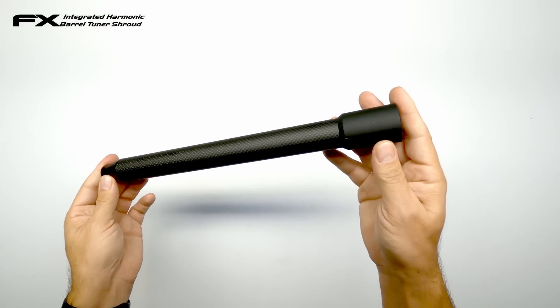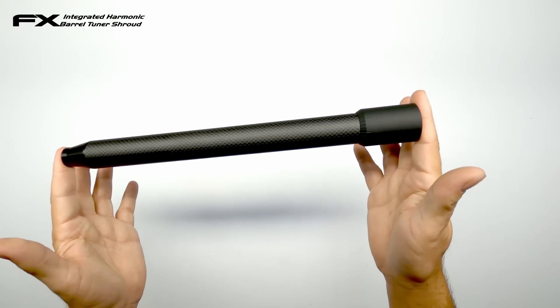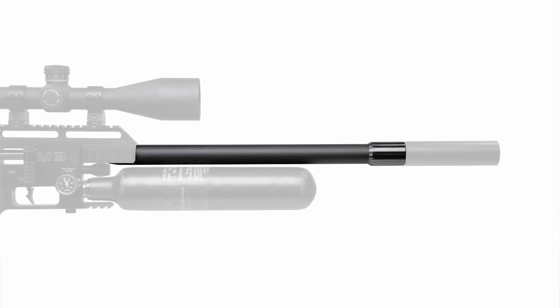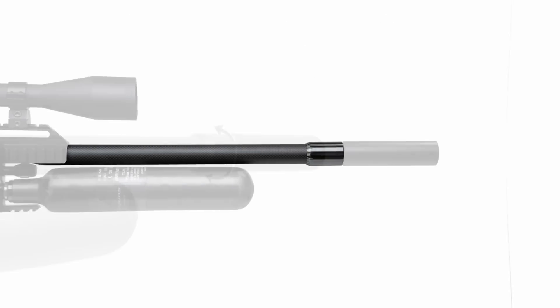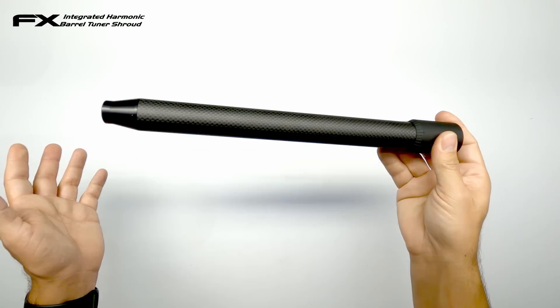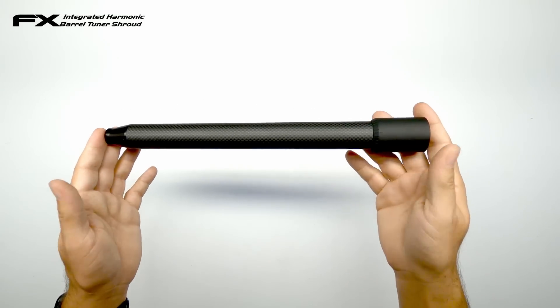Most of you probably already know what this is, but those of you who don't, this is the FX airguns integrated harmonic barrel tuner shroud. What does it do? Well, it allows you to dampen, stiffen up your barrel and gives you the ability to harmonically tune your barrel.